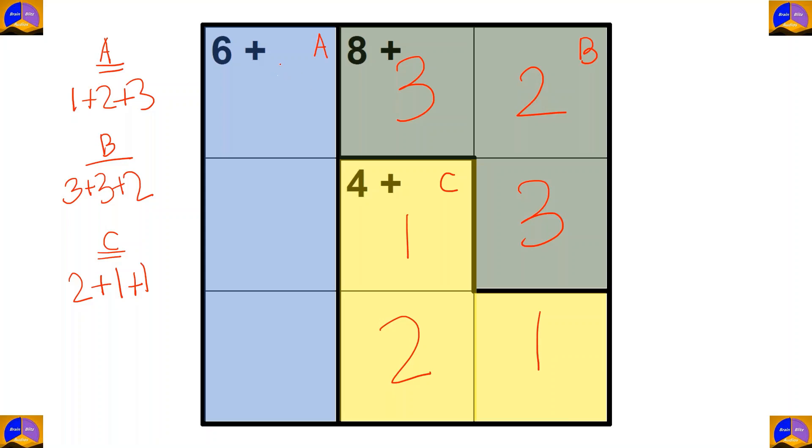Now, for completing this row, here it will be 1, here 2, and here 3. Let's recheck the puzzle. 1 plus 2 plus 3 is equal to 6, 3 plus 2 plus 3 is equal to 8, and 1 plus 2 plus 1 is equal to 4.